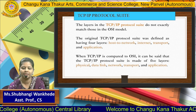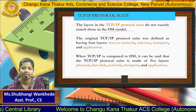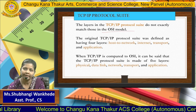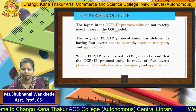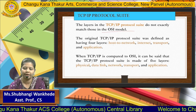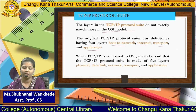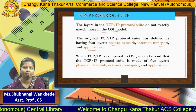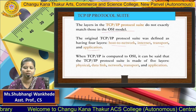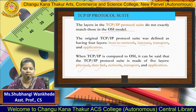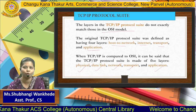The layers in the TCP/IP protocol suite do not exactly match the OSI model. The OSI model has seven layers, while TCP/IP has only five layers. The basic four layers defined are host-to-network, internet, transport, and application. When TCP/IP is compared to OSI, the five layers are physical, data link, network, transport, and application, which combinedly form the TCP/IP protocol suite.